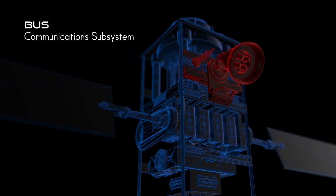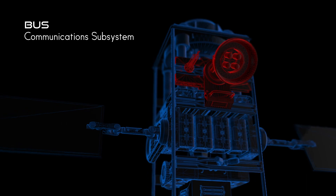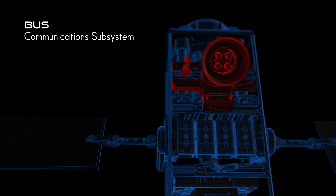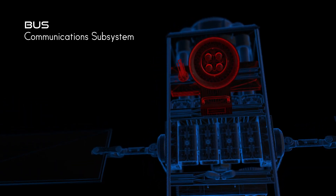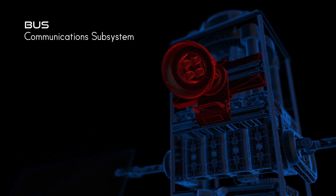The next subsystem is the communications subsystem. This subsystem allows the ground to send commands to the satellite and disseminate information such as satellite position and payload data to the ground. This subsystem is primarily made up of transmitters, receivers, and antennas. It is important to note that communications can be the mission of the spacecraft, but most spacecraft have a need to receive commands and send telemetry.